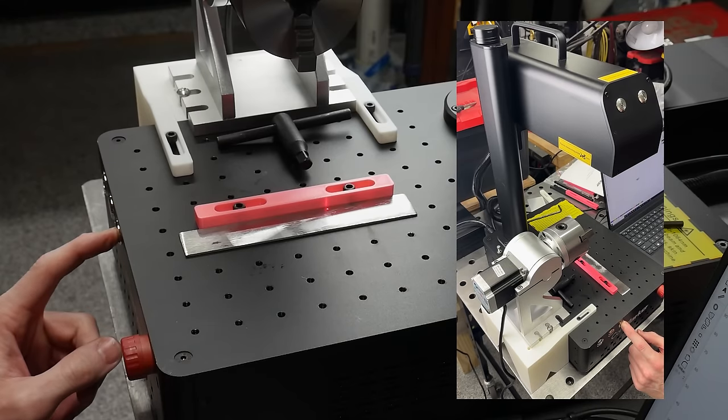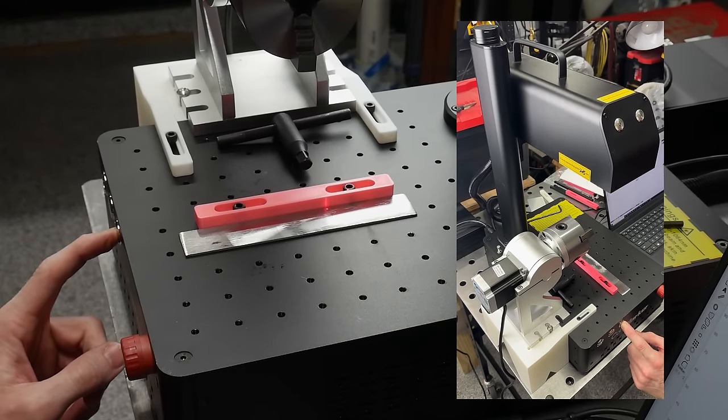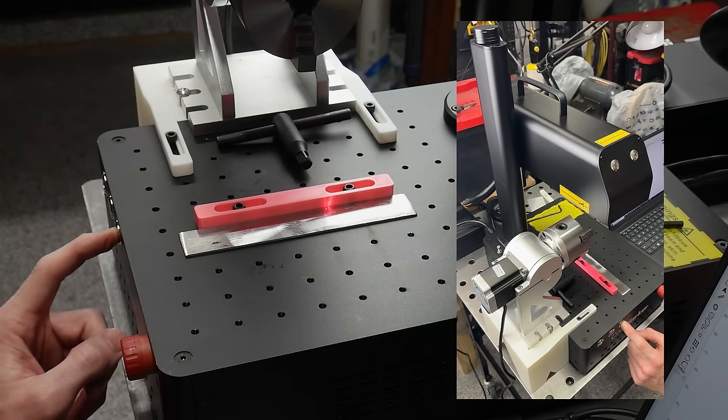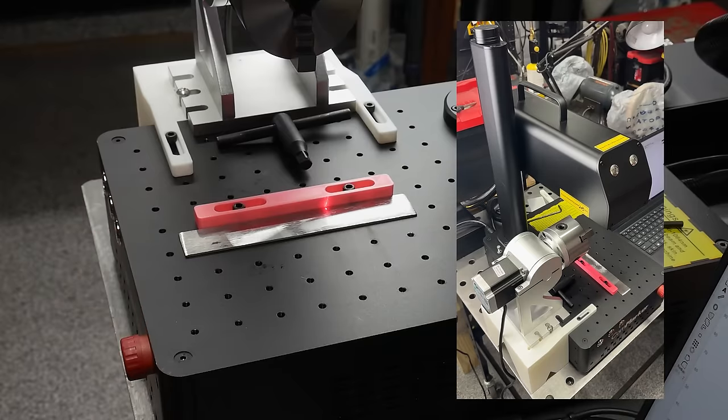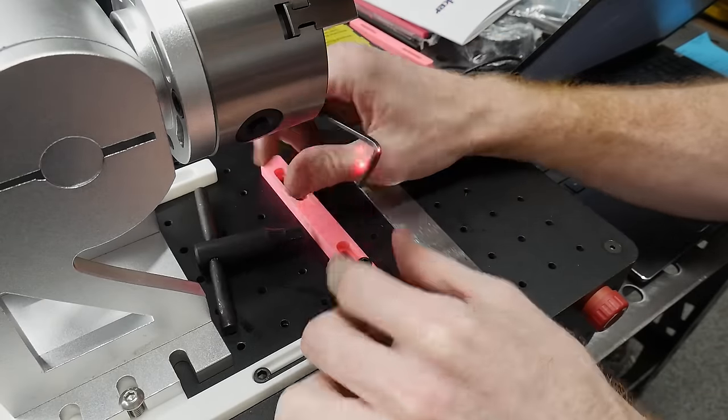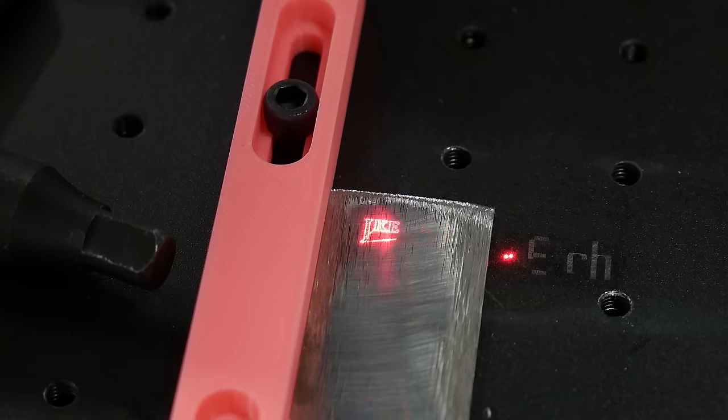ComMarker recently sent me this machine for testing on the channel and there will be a dedicated review coming out in a few weeks but here is a sneak peek at what it can do. The main reason I wanted to test a fiber laser in the shop is for marking steel.